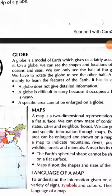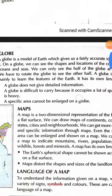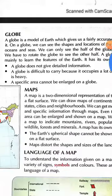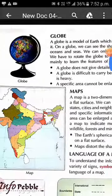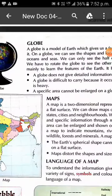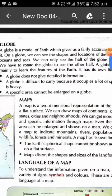Only features of the earth can be shown on the globe. It has its own limitations. A globe does not give detailed information of a specific area. A globe is difficult to carry because it occupies a lot of space and it is heavy. A small specific area cannot be enlarged on a globe.